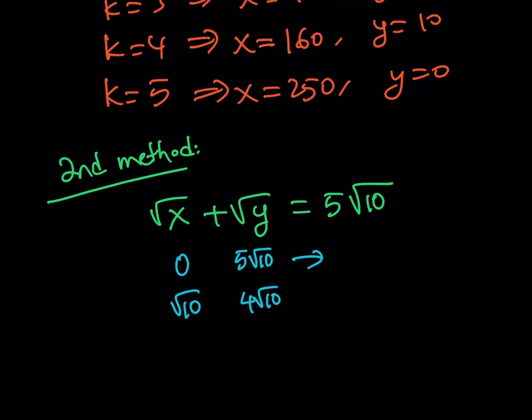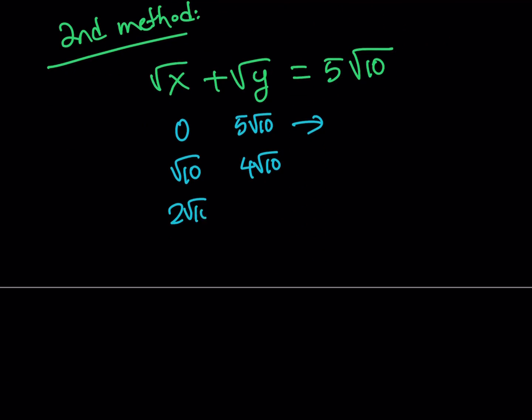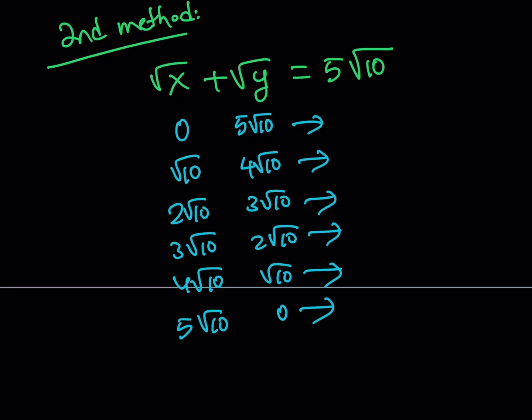And then this can be 2 root 10 and this can be 3 root 10, or they can switch around. Or they can again switch around, or they can switch around again. So basically what happens is we get the same solutions from here so I'm not going to repeat those because they're going to be exact same results.